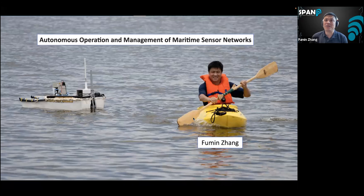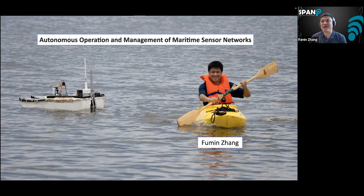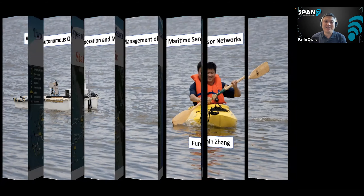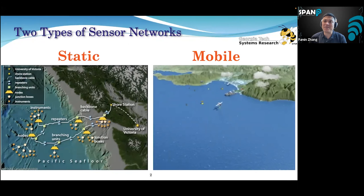The title picture is me with a marine robot autonomous surface vehicle we developed about 11 years ago, and that was me about 30 pounds lighter than currently — so I can't fit in a canoe without getting flipped. Today's topic is about how you can collect data in the ocean.